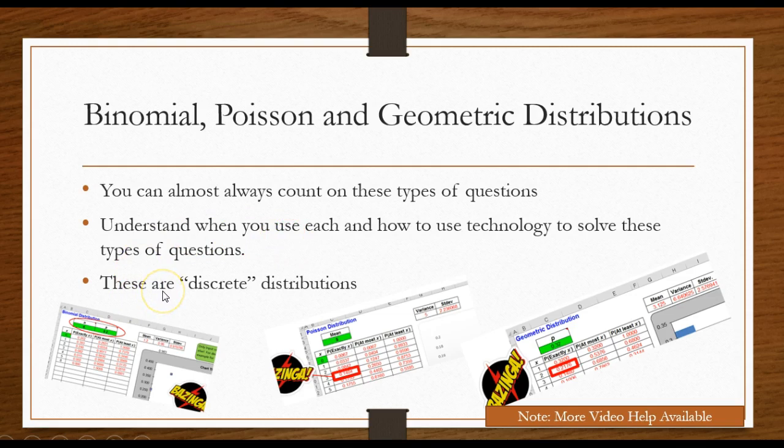Also understand that these are discrete distributions: the binomial, the Poisson, and the geometric, whereas the normal distribution is a continuous distribution.